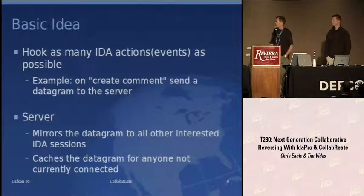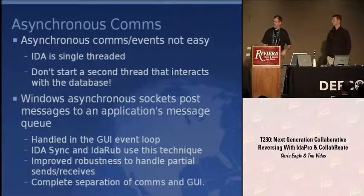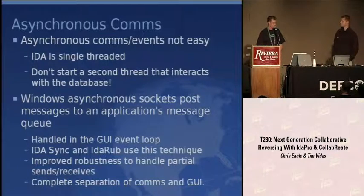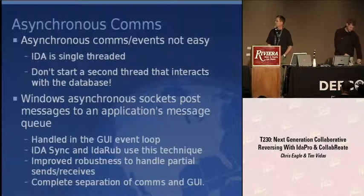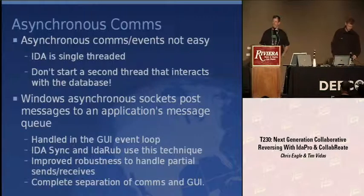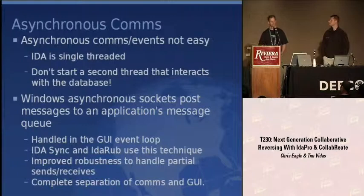The server mirrors all received packets out to any connected users while caching datagrams for anybody who may connect in the future. The limitations we deal with are primarily forced on us by IDA being a GUI application on Windows, running a Windows message processing loop. We've got to tie into that loop through the use of Windows asynchronous sockets, which advertise various network events in the form of Windows messages received through the message queue.